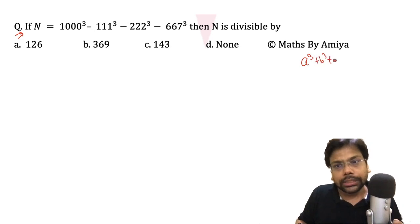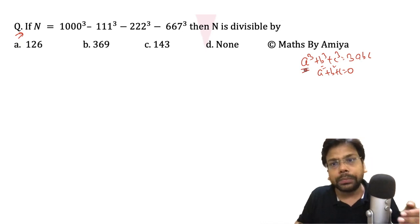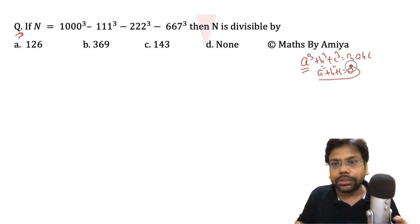A³ + B³ + C³ is nothing but 3ABC if you have A + B + C equal to 0. So we have solved a lot of questions of the factorization or the factor of A³ + B³ + C³ if the summation of all three is 0. This is more or less a seen algebraic concept and this one is my middle entry.